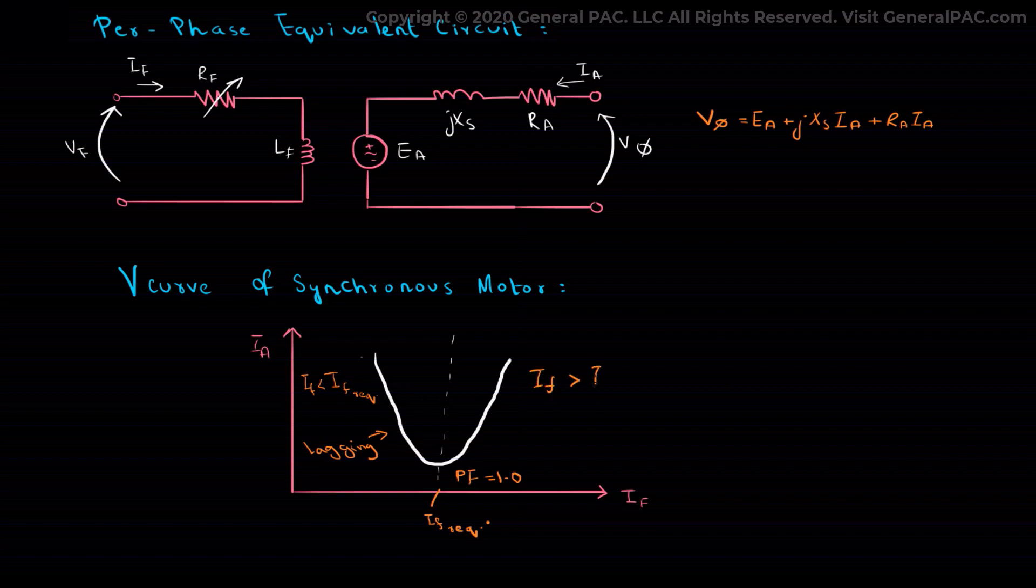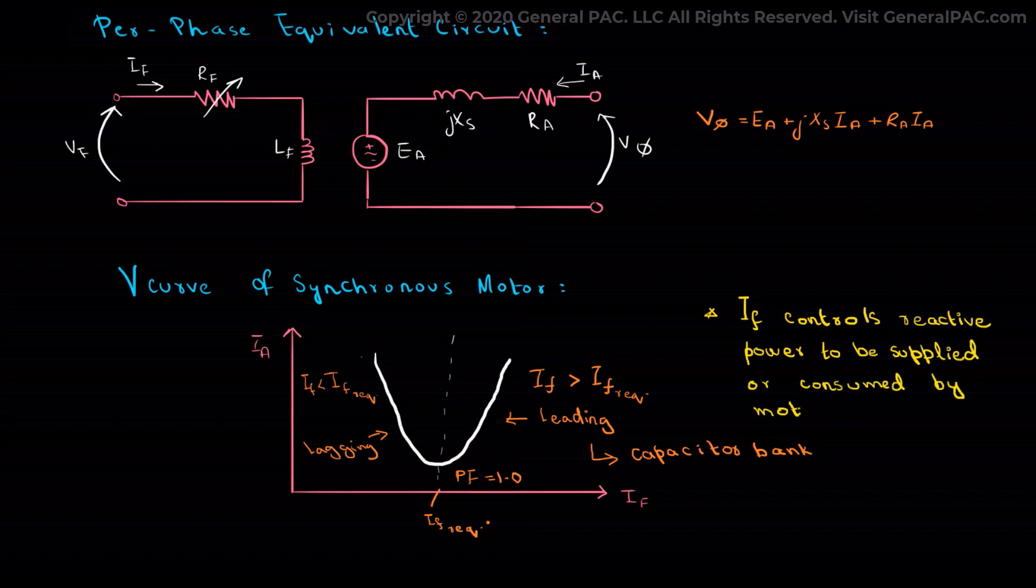But for all values higher than the If which gives us the minimum Ia, Ia is leading and reactive power is supplied by the motor, i.e., the motor acts as a capacitor bank. So we can conclude here that the field current controls the reactive power to be supplied or consumed by the motor.